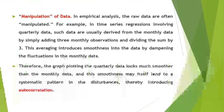While doing empirical analysis, we often manipulate the raw data, and such manipulation becomes a reason for the problem of autocorrelation. For example, in a time series regression involving average monthly production in a quarter, such data are usually derived from monthly data by simple arithmetic average — adding three monthly observations and dividing by three. This averaging introduces a kind of smoothness into the data by dampening the fluctuations in the monthly data. The graph plotting the quarterly data looks much smoother than the monthly data, and this smoothness may itself lead to a systematic pattern in the disturbances, thereby introducing autocorrelation.